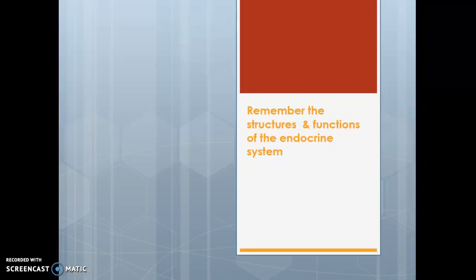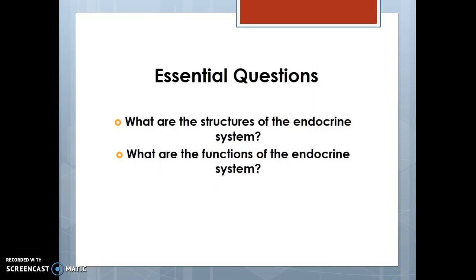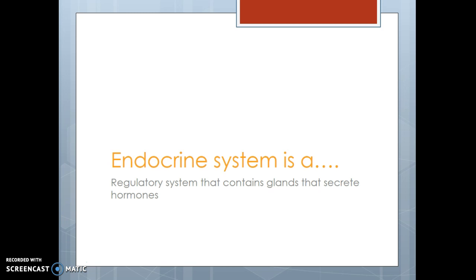In this video we're going to talk about remembering the structures and functions of the endocrine system. The endocrine system is a group of glands in the human body that secrete hormones which have target cells. The essential questions are what are the structures of the endocrine system and what are the functions. The endocrine system is simply a regulatory system that contains glands that secrete hormones.